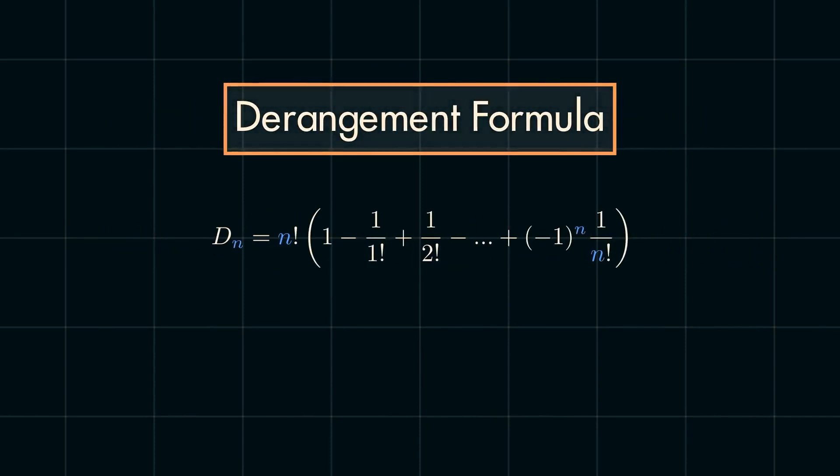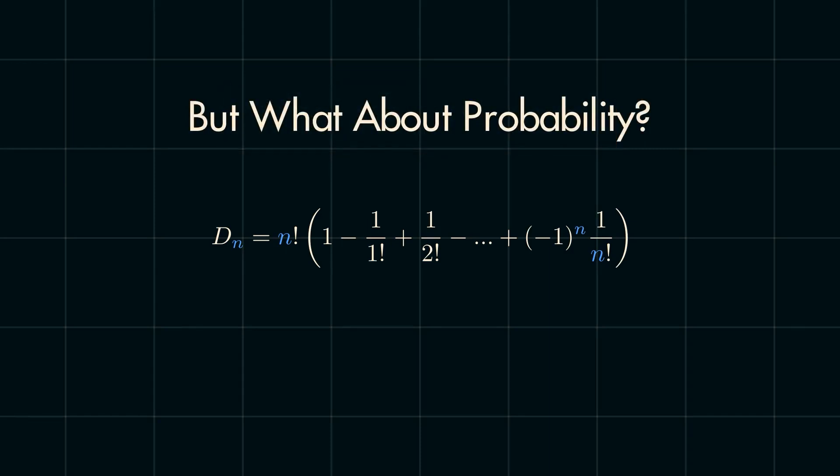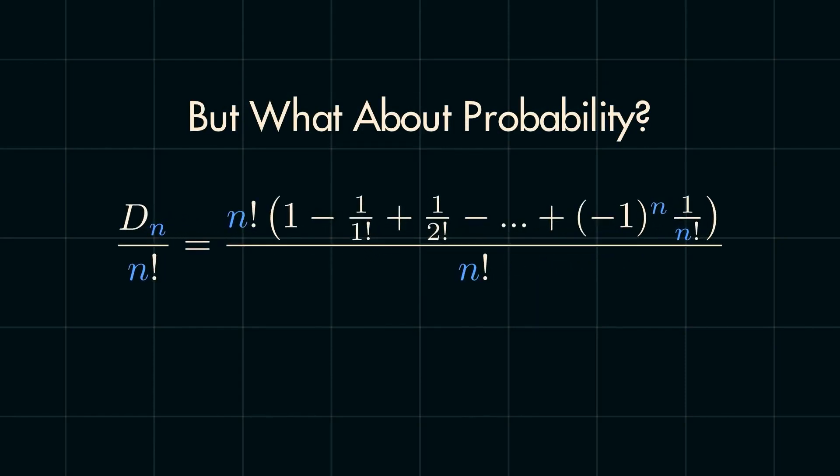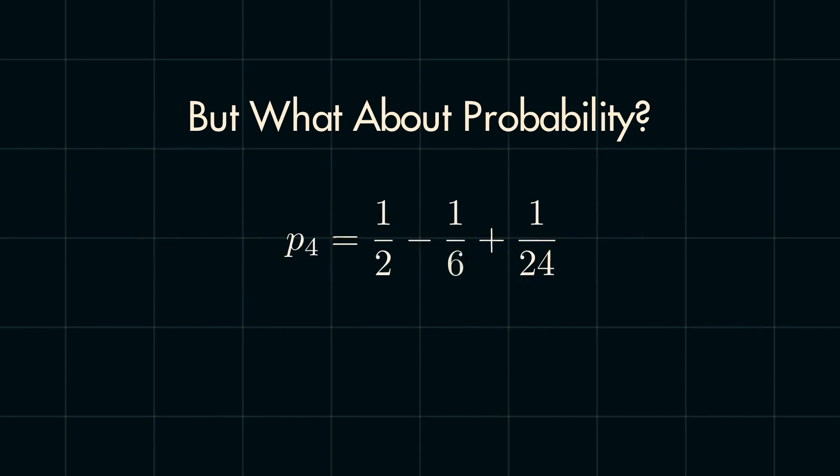This little equation is the formula for the number of derangements for a set of n elements, but recall that our original question asked us to find the probability of a derangement. Thankfully, this is not much more difficult because we should divide d sub n by the total number of possible orientations we found before to be n factorial. And with that, we can now finally find the answer to Todd's burning question. The probability that nobody will get the same hat back is 37.5%.